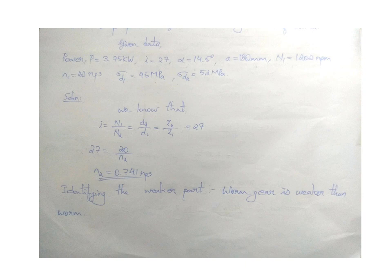Speed of worm N1 equals 1200 rpm which can be converted into rps by dividing by 60, so small n1 equals 20 rps. And the two stresses are 45 megapascal and 52 megapascal.